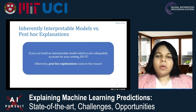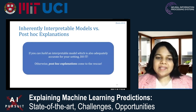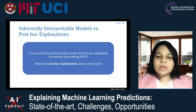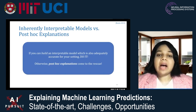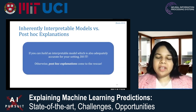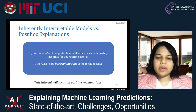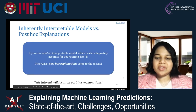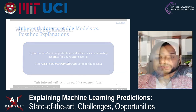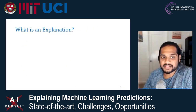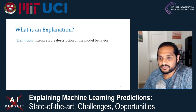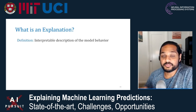In summary, if you can build an interpretable model that is also adequately accurate for your setting, please do it. Otherwise, post-hoc explanations can come to your rescue. This tutorial will focus on post-hoc explanations. One way to define what an explanation is: an explanation is any interpretable description of the model behavior. On one end you have your classifier with some really complex surface, and on the other you have a user trying to understand it. The explanation is the thing in between.